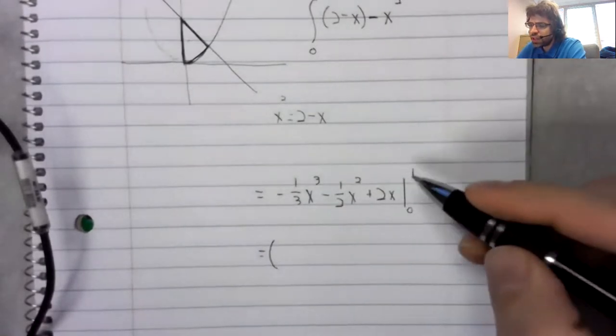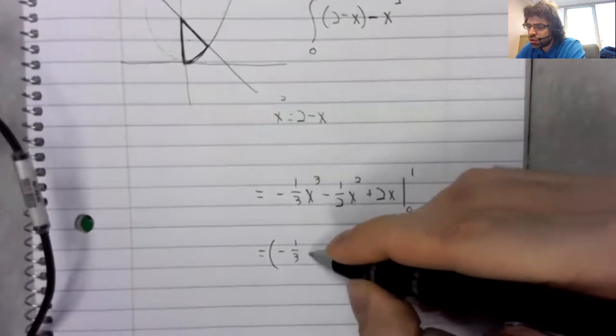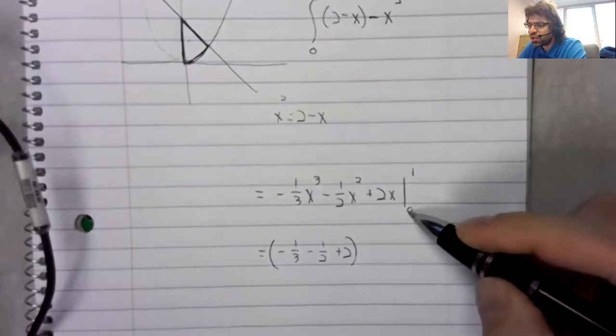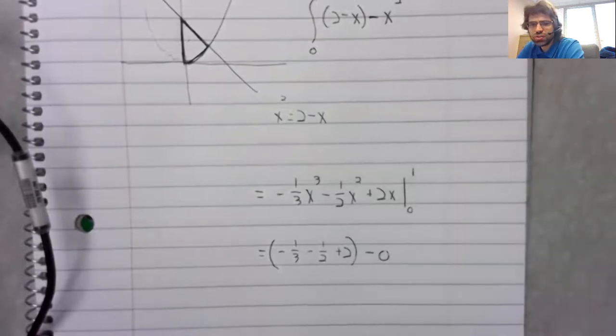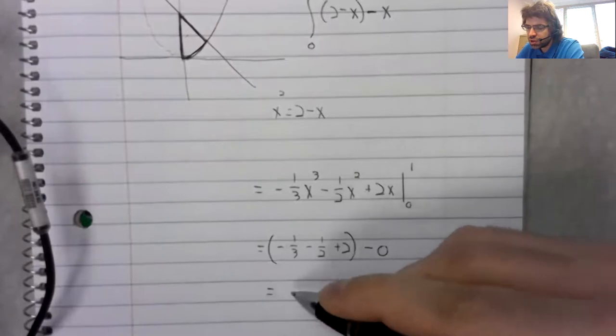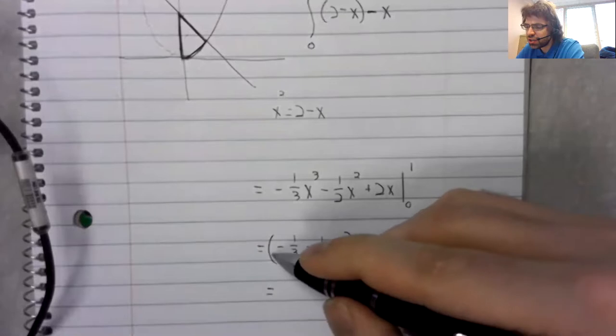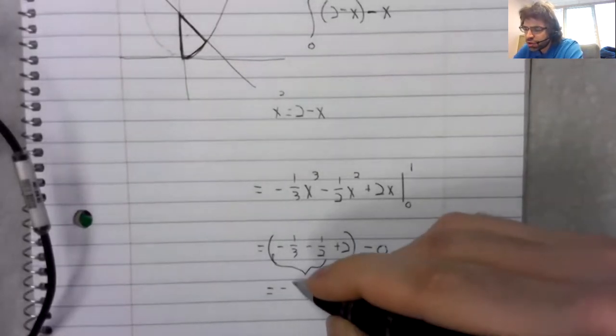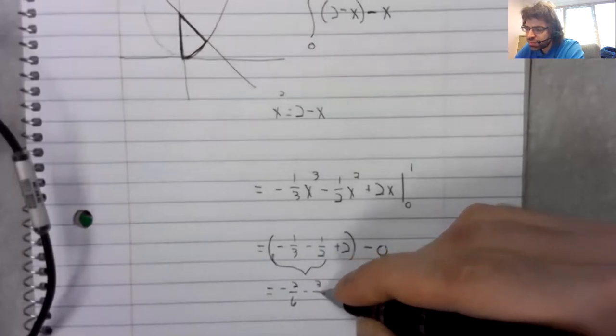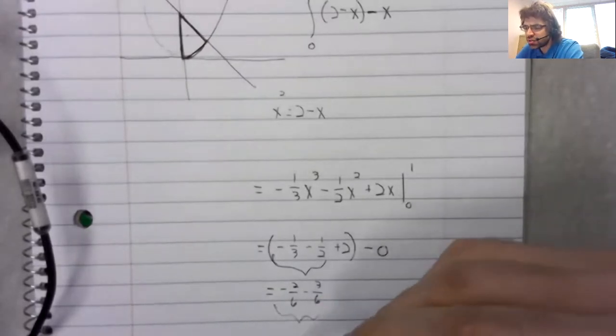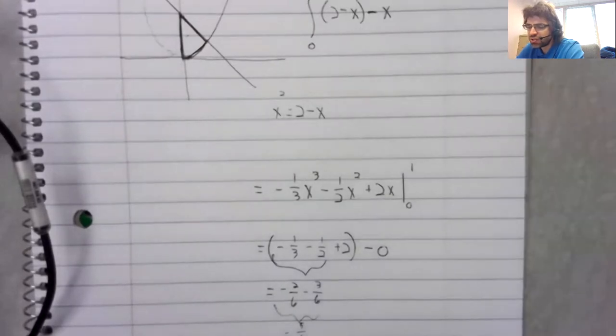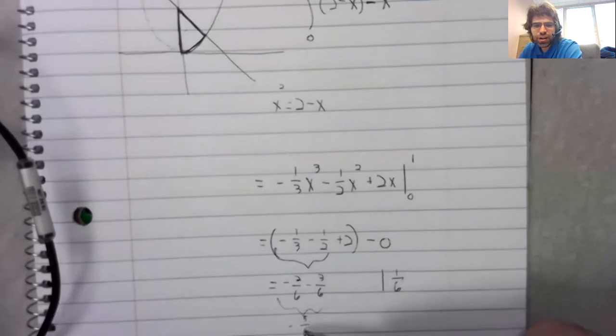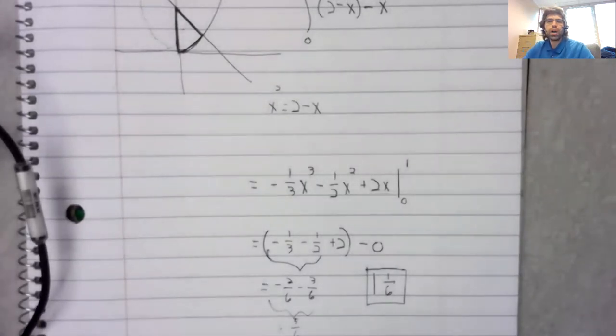We plug one in here, we get negative one third minus one half plus two. We plug zero in, we get zero. You could just plug this into your calculator. Negative one third is negative two sixths minus three sixths, so negative five sixths. If we have two and we take away five sixths, we're left with one and a sixth.